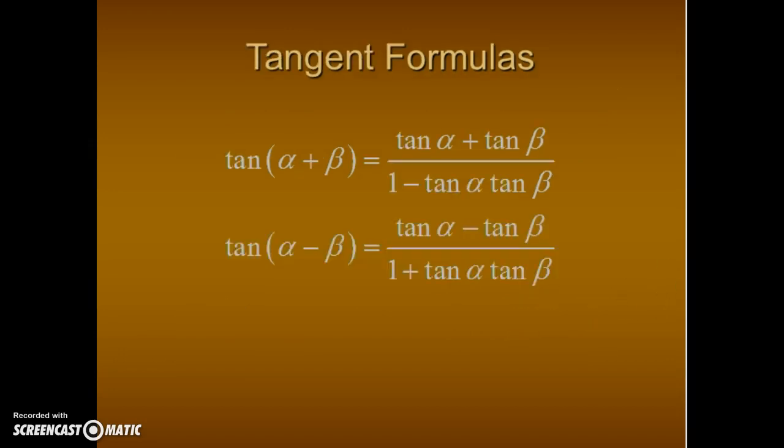Now let's talk about the tangent sum and difference formulas. The tangent sum formula: the tangent of alpha plus beta equals the tangent of alpha plus the tangent of beta, all over 1 minus tangent alpha times tangent beta. The tangent difference formula: the tangent of alpha minus beta equals the tangent of alpha minus the tangent of beta, all over 1 plus tangent alpha times tangent beta.